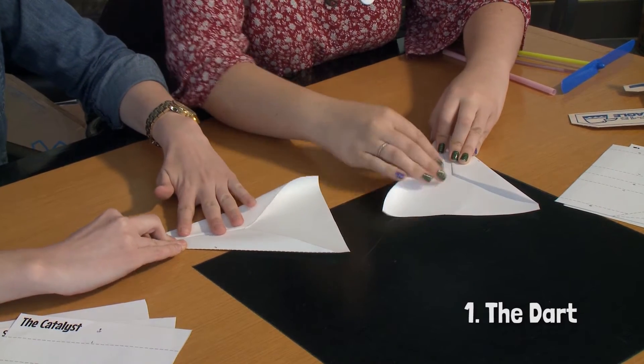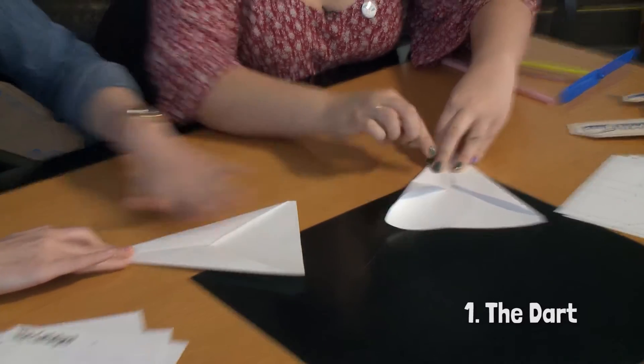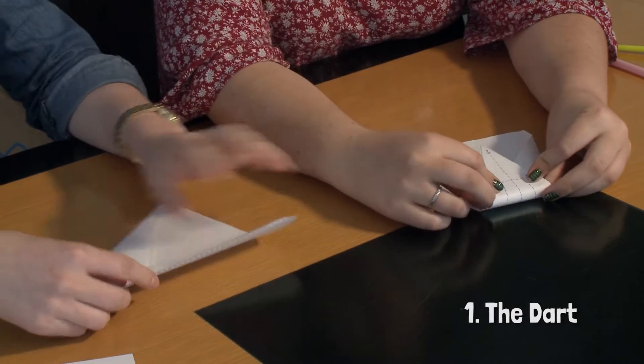And we're going to fold the second half over to meet it. There we go. And then we're going to fold back until we see line three.